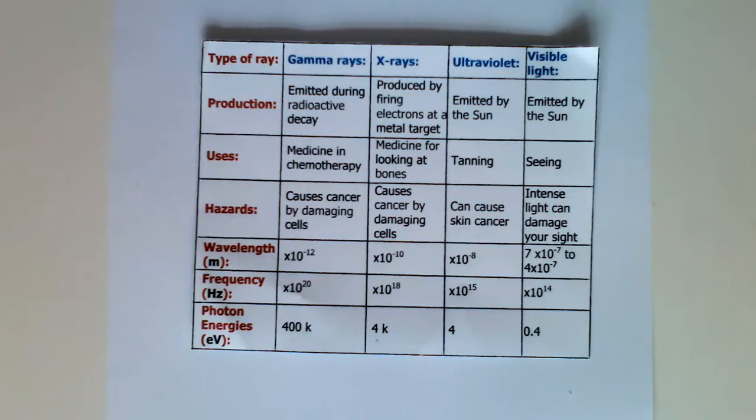X-rays production, produced by firing electrons at a metal target, uses medicine for looking at bones, hazards causes cancer by damaging cells, wavelength times 10 to the minus 10, frequency times 10 to the 18th, and photon energies 4k.